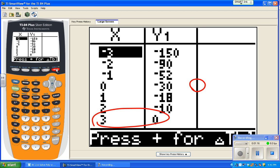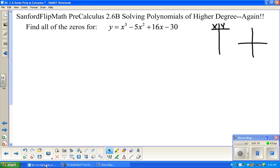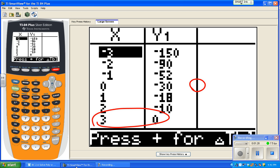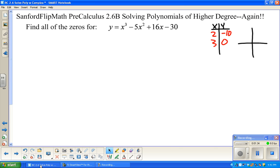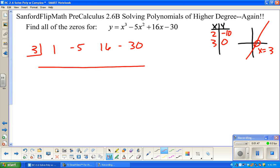So x equals 3. If you pull your information from a table, then I need to see some kind of evidence of what you looked at. And if it came from a graph, then I need to see some kind of evidence of what you looked at. We're going to start with 3 in our little box. We pull that first number down, and then after this is multiply, add, multiply, add, multiply, add.